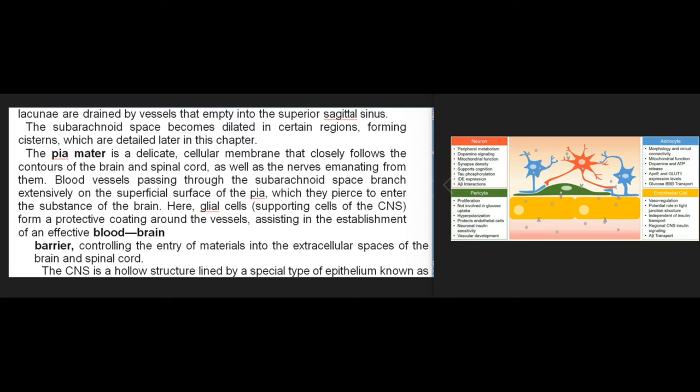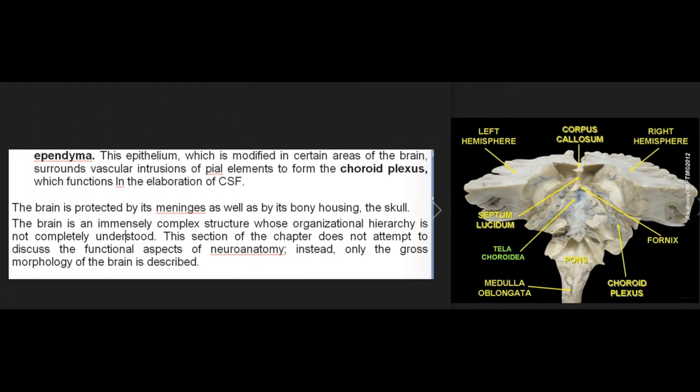The pia mater is a delicate cellular membrane that closely follows the contours of the brain, spinal cord, and the nerves emanating from them. Blood vessels passing through the subarachnoid space branch extensively on the superficial surface of the pia, which they pierce to enter the substance of the brain. Here, glial cells — the supporting cells of the CNS — form a protective coating around the vessels, assisting in establishing an effective blood-brain barrier, controlling the entry of materials into the extracellular spaces. The CNS is a hollow structure lined by a special epithelium known as ependyma, which is modified in certain areas and surrounds vascular intrusions of pial elements to form the choroid plexus, responsible for the elaboration of CSF.